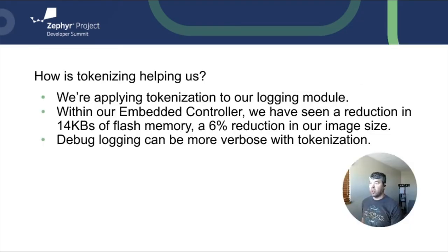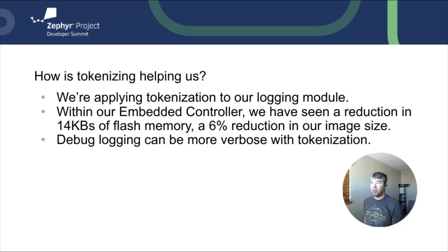So how is tokenizing helping us? We're applying tokenizing to our logging module in the Embedded Controller. This has reduced the EC image size by 14 kilobytes, a 6% reduction in image size. This will allow us to add more features in the future. With tokenization, we can be more verbose in our logging. I'll no longer need a magic decoder ring to parse the meaning of numbers or some shorthanded debug statement.